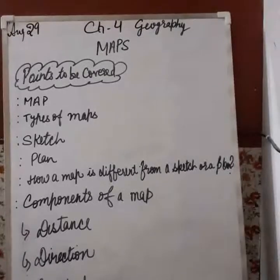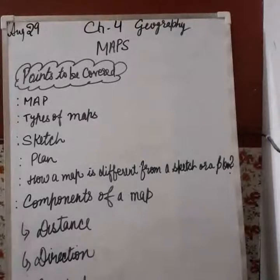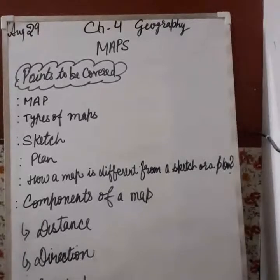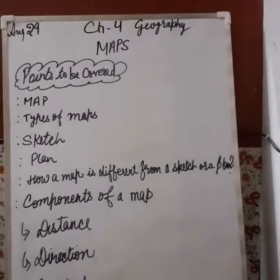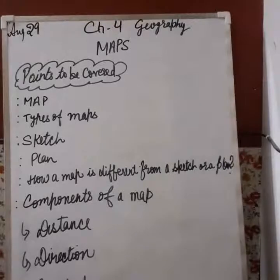A map is a representation or a drawing of the earth's surface or a part of it, drawn on a flat surface according to a scale. In your previous chapter you studied the globe in detail. A globe is very useful when we want to study the earth as a whole, but if we want to study only a particular country, state, district or village, the globe is not of much use. Maps provide more precise and detailed information than a globe.